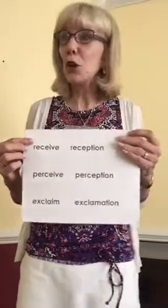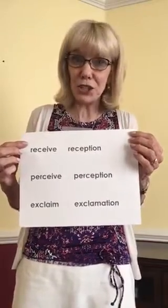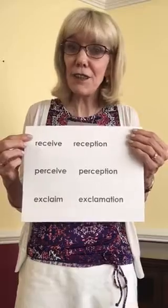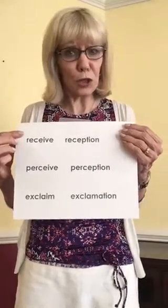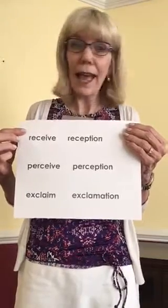Remember that 'I before E except after C, or as sounded as A as in neighbor and weigh' rule? Well, this too has an explanation in meaning. Let's take a look at a few words like these: receive, reception, perceive, perception, or even exclaim, exclamation. When students become inquisitive about meaning, they can discover that when base words have an AI or EI spelling, the derived word — like reception, perception, or exclamation — has simply an E. The I is left off. And this again is like a mystery to be solved.